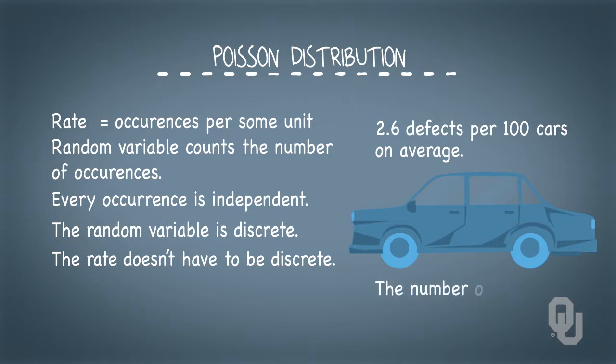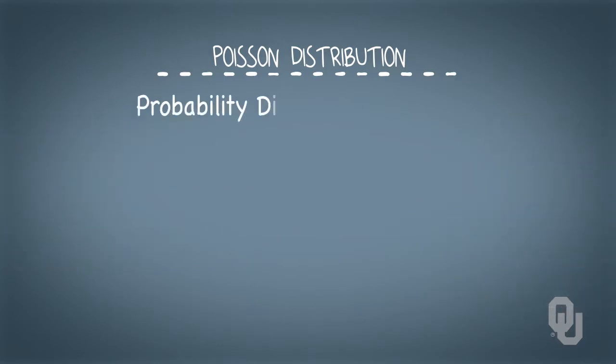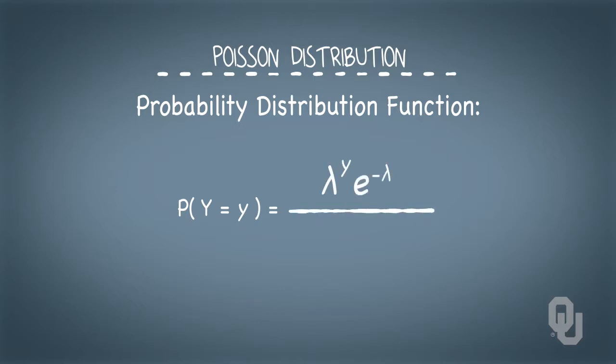But the actual observation of defects per 100 cars must be discrete. The probability distribution function for the probability that random variable y takes on a value little y is lambda to the y times e to the minus lambda divided by y factorial.